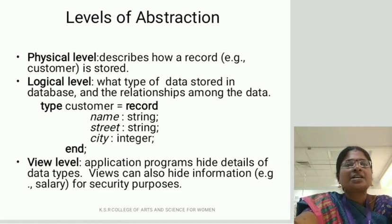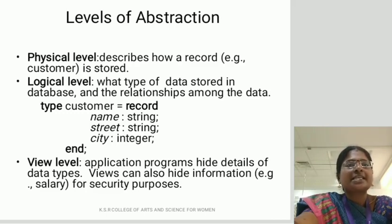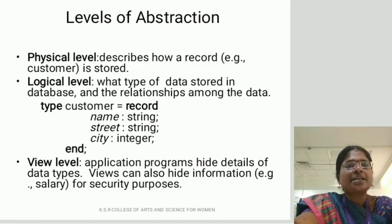Levels of abstraction. There are three types of levels available. First is the physical level — it is the lowest level and describes how data is stored in a database. Second is the logical level — it describes what type of data is stored in the database and the relationship between those data. Third is the view level — it is the highest level. Application programs hide details of data types. Views can also hide information for security purposes, for example, salary.